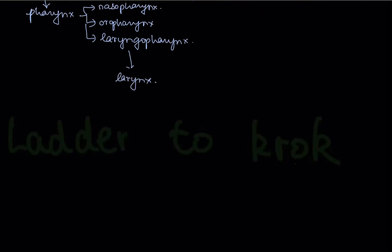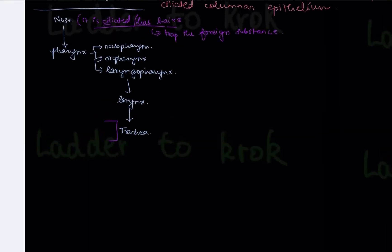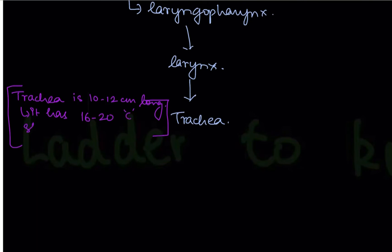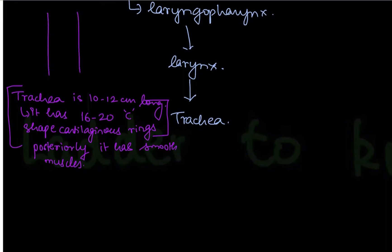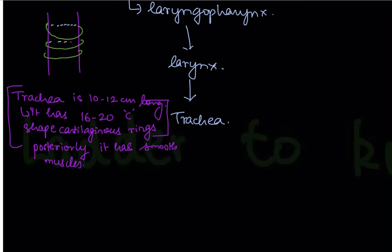The larynx then becomes your trachea. Important points about the trachea: it is 10 to 12 centimeters long, or 4 inches. It has 16 to 20 C-shaped cartilaginous rings, which are present on the anterior and lateral sides. Posteriorly, it is covered by smooth muscles.